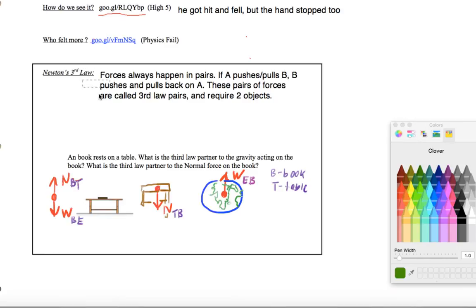So I want to add one more clause to this, which is, if one object feels more of an effect, it is because it has less mass.